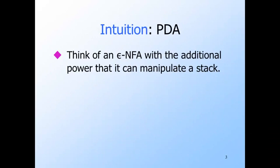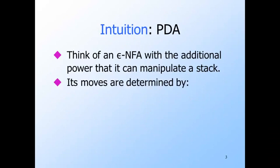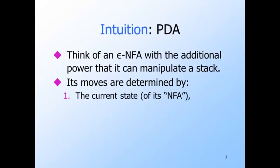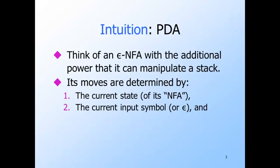We'll get to a formal definition of a PDA shortly, but to start, think of the PDA as an epsilon NFA with an additional stack on which you can store symbols. Like any stack, you can only see the top symbol. The next move of the PDA is a function of three things. The move can depend on the state it is in, just like a finite automaton. The move also depends on the next input symbol, or the PDA may make a move on epsilon, that is, without regard to the next input symbol. This behavior is exactly like that of the epsilon NFA.